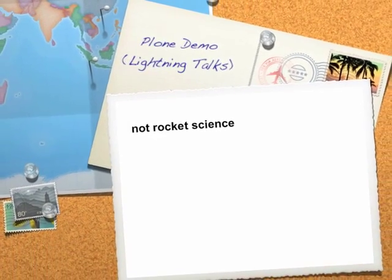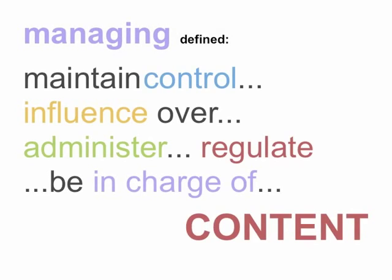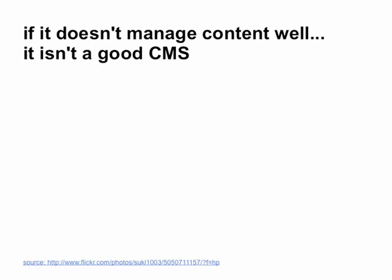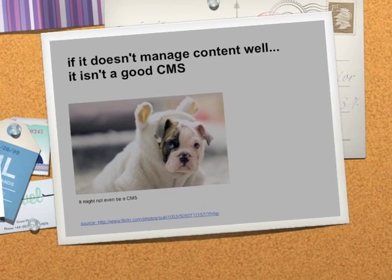The premise of a content management system is about content management. Managing content is pretty much like managing a desktop. You have files and you want to organize them. You want to make sure that you put things where they should be, knowing where to look for things, and regulating how your content works and influencing how it works. If your platform isn't tailored for doing these things, you may not actually have a content management system. It might be a blogging platform or something else.